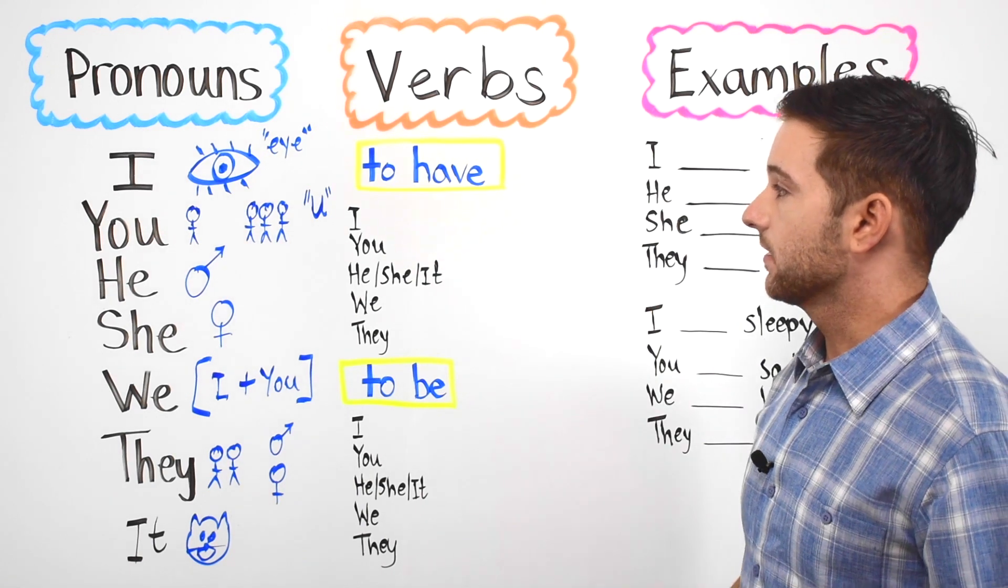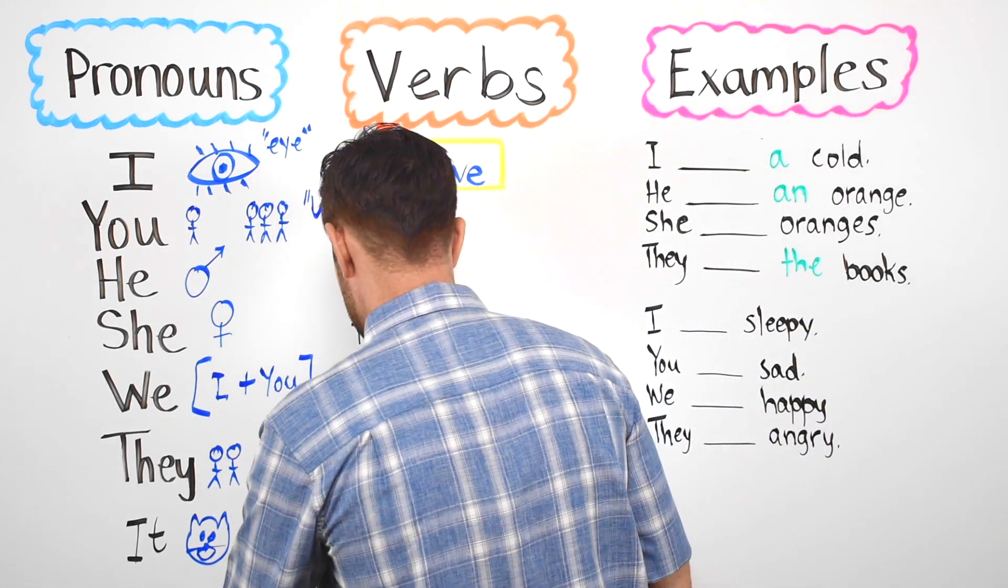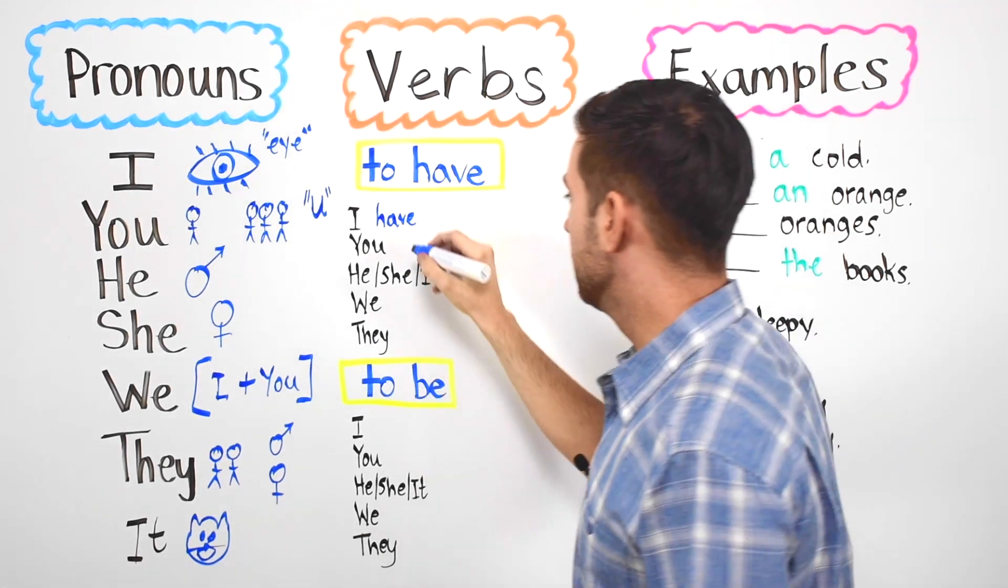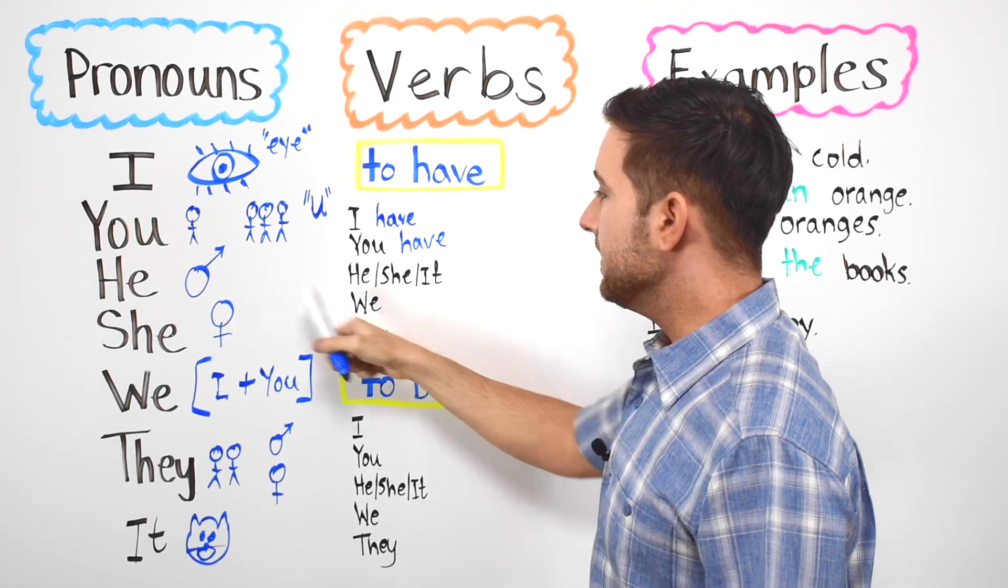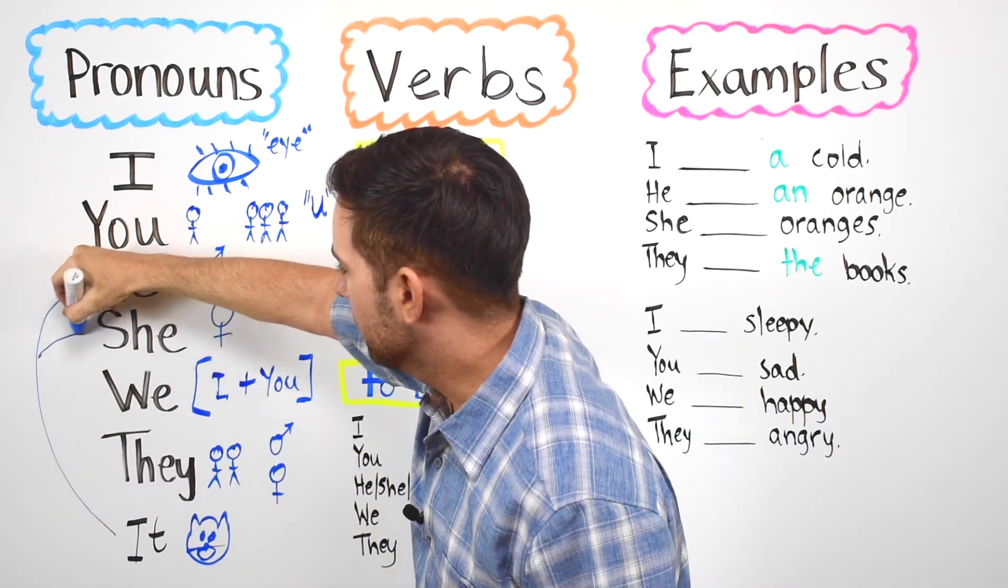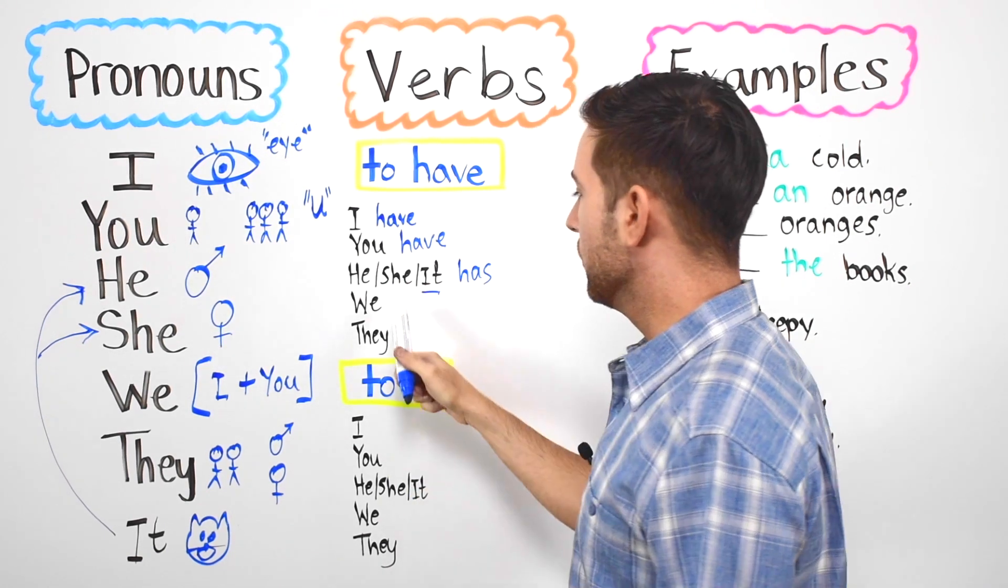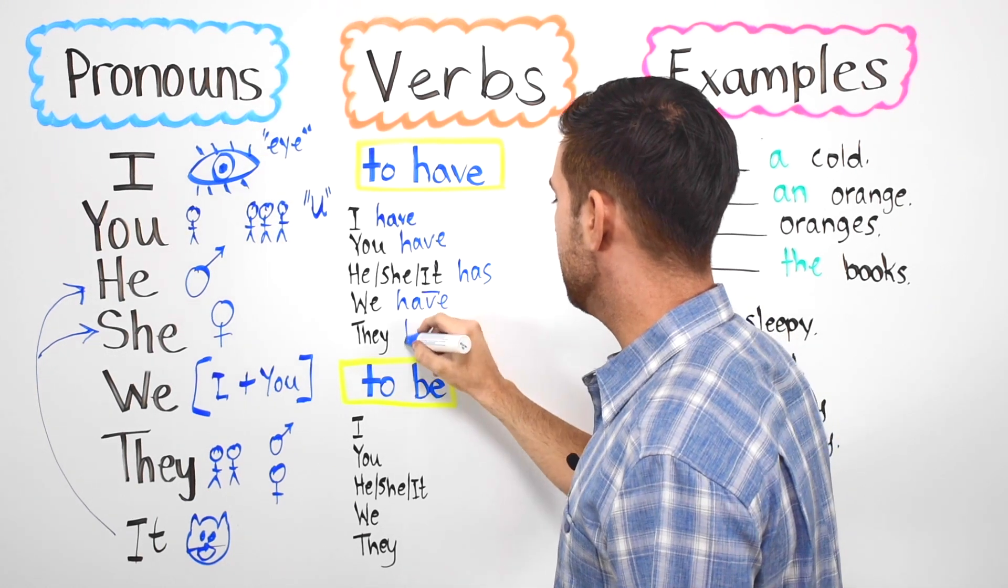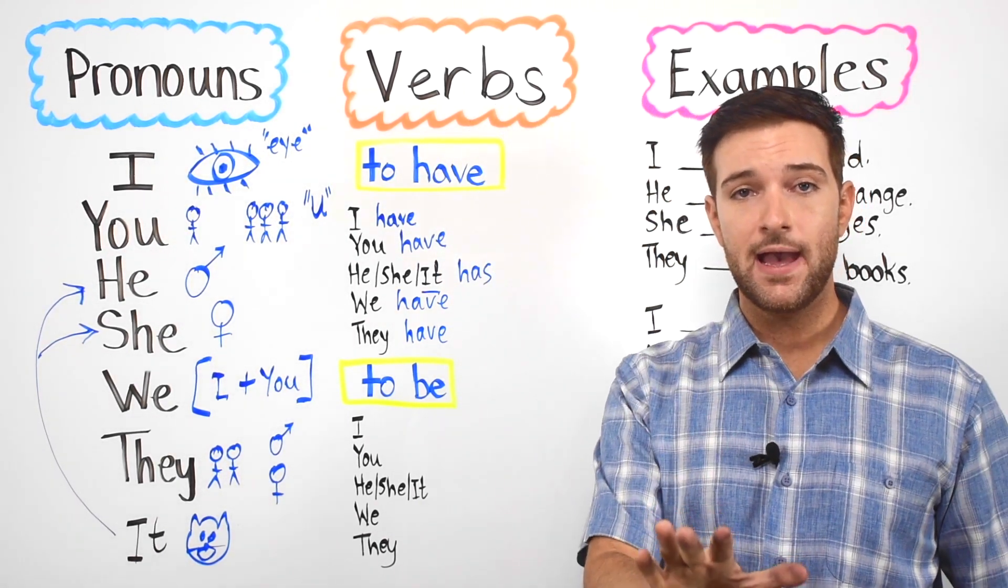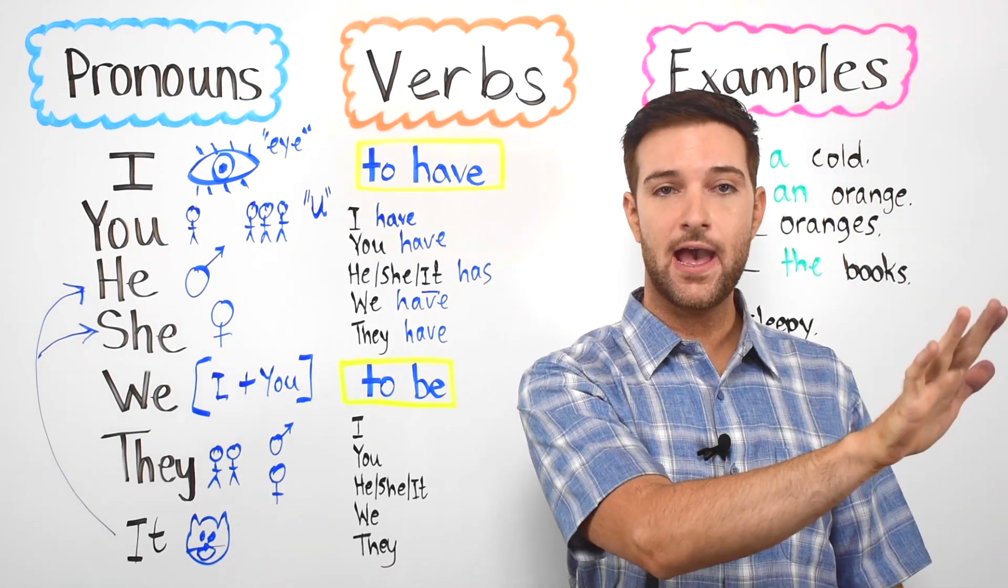Our first verb is the verb to have. Let's go ahead and conjugate the verb to have. We have I have. You have. He, she, it has. We have. And they have. Again, I have, you have, he has, she has, it has, we have, they have.